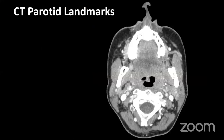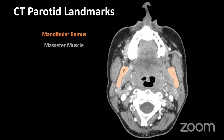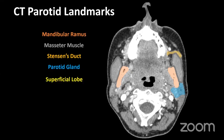Moving to the parotid gland — I have only two cases in this region. Let's first do a brief revision of parotid anatomy. Start with the mandibular ramus; once you identify it, the masseter muscle is easy to see just outside it. Then trace Stenson's duct, which runs anteriorly along the masseter muscle. Remember: the facial vein is anterior to the insertion of Stenson's duct at the level of the second upper molar. After identifying the duct, the parotid gland is easy to see just posterior to the mandible.